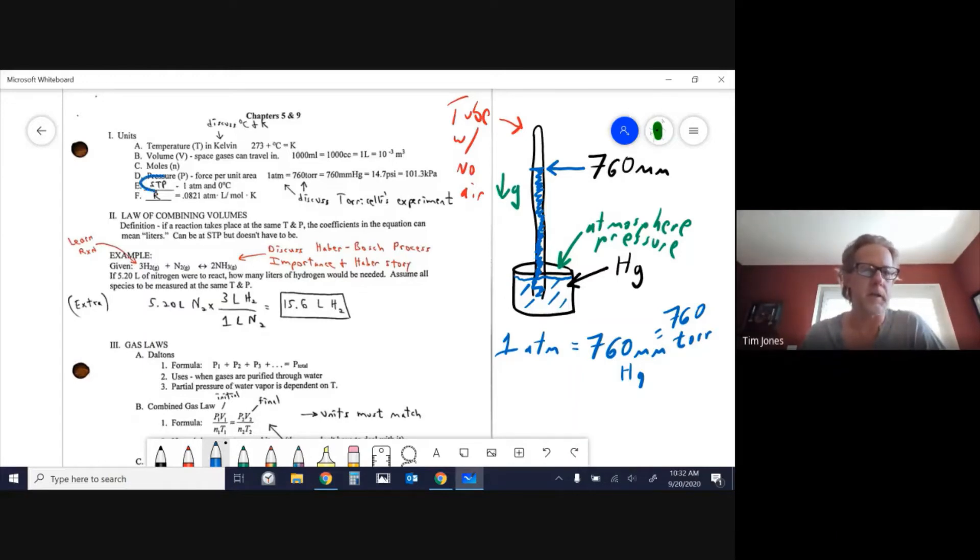STP, standard temperature and pressure. It's just a set pressure and a set temperature. One atmosphere, which is normal, and zero degrees Celsius, which is a little cold. R, you should remember R is 0.0821 with these units. Be aware you will see R in different units. Sometimes the atmosphere will be changed to millimeters of mercury, or the volume will be changed from liters to milliliters. You usually don't see moles and Kelvin change. And so if you see a different number here, there's a good chance the units were changed.